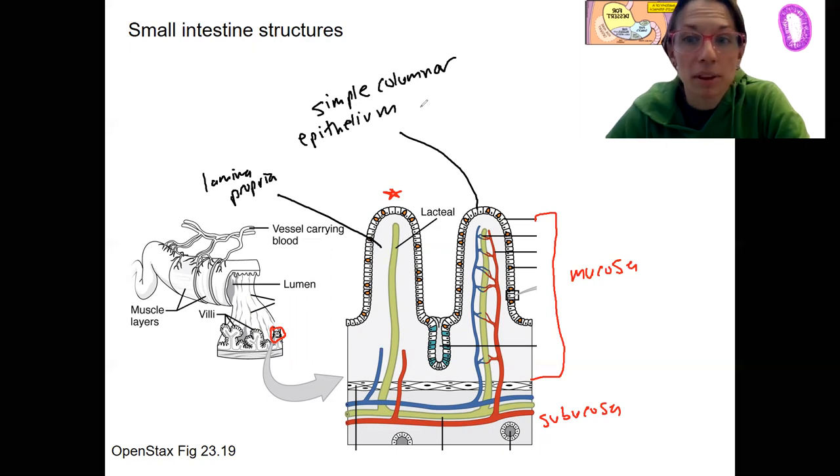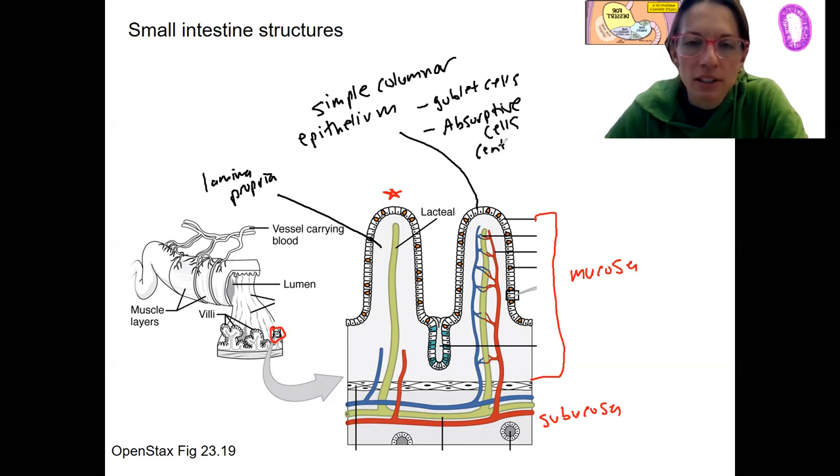Our simple columnar epithelium has epithelial cells. Some of these are goblet cells. That's these orange ones here. And some of them are absorptive cells, also called enterocytes. What do you think these do? They are going to absorb nutrients.